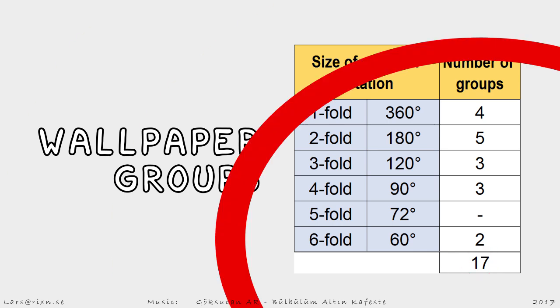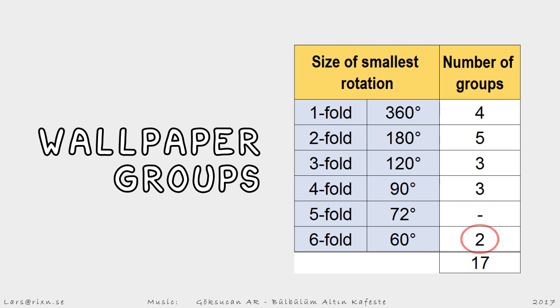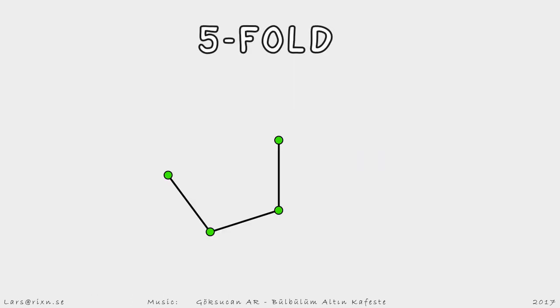Six-folds have two wallpaper groups. But notice that there are no groups for five-folds. This is because it's not possible to rotate five-fold and achieve translational symmetry. The points don't add up.